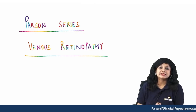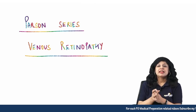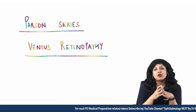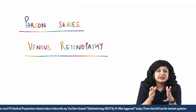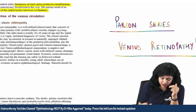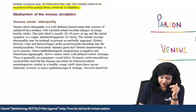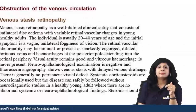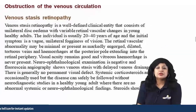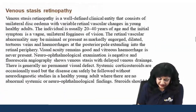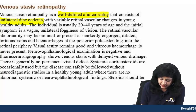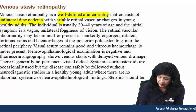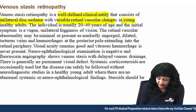Welcome to the Parson series. In continuation of the vascular disorders of the retina, we'll be doing venous retinopathies today. I hope you have already gone through the CRAO and BRVO, and today we are starting with venous stasis retinopathy — a well-defined clinical entity consisting of unilateral disc edema with variable retinal vascular changes occurring in young adults.